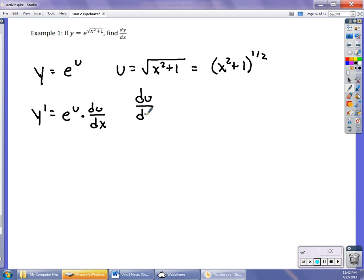So let's do that. So du dx is 1 half times x squared plus 1 to the negative 1 half times 2x. These twos will cancel, and really I have x over the square root of x squared plus 1.